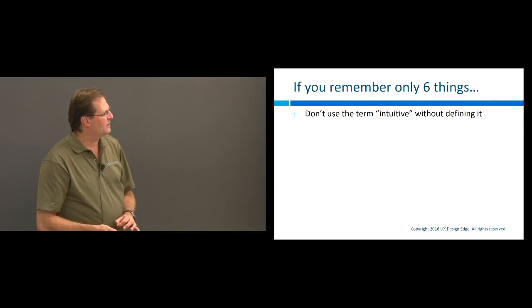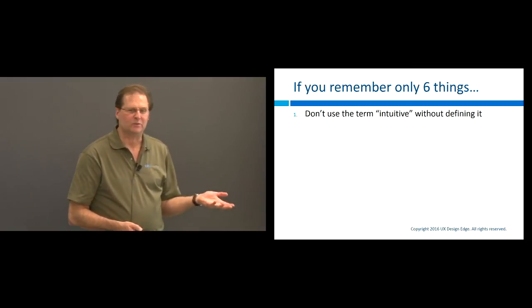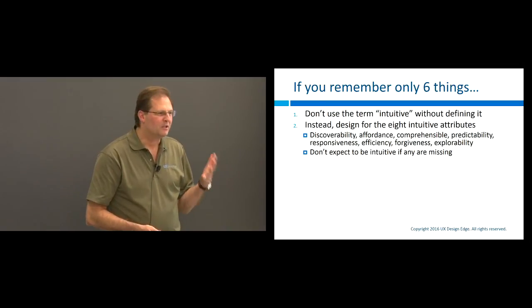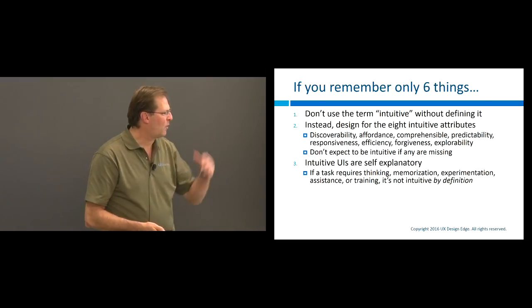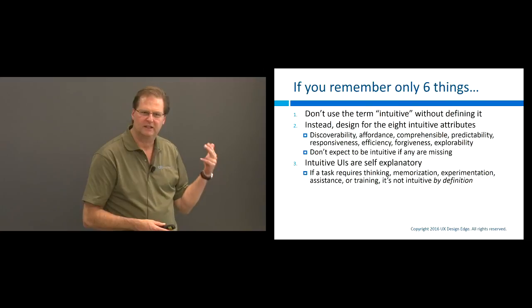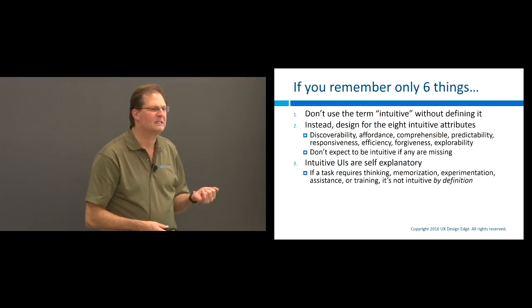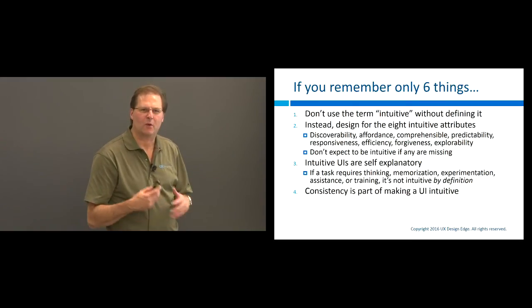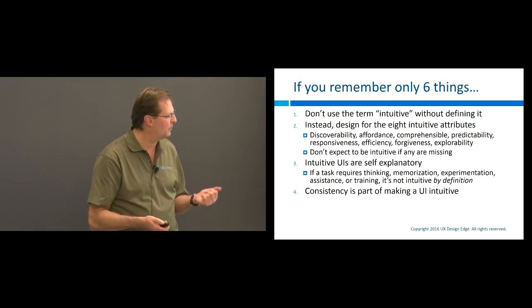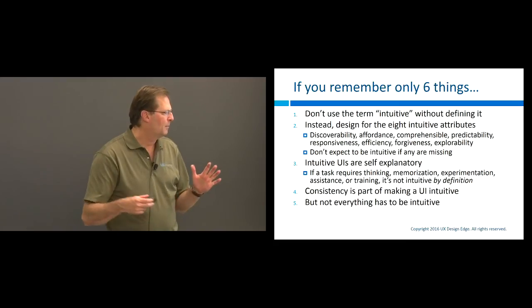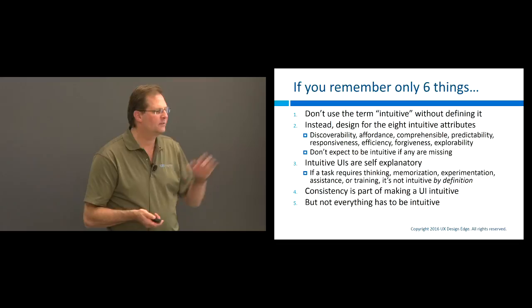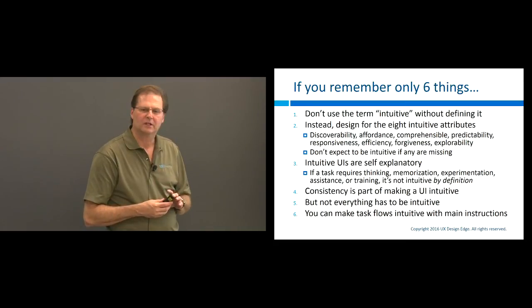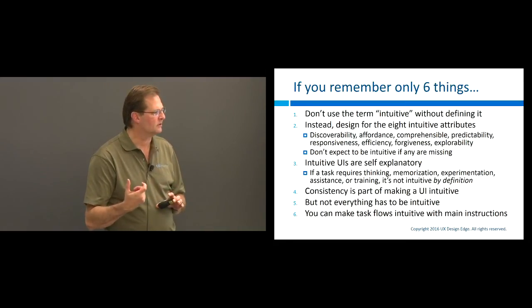If you remember only a few things: don't use the word intuitive without defining it — nobody knows what it means. Instead use the eight intuitive attributes: discoverability, affordance, comprehensibility, responsiveness, predictability, efficiency, forgiveness, explorability. Intuitive UIs are self-explanatory — if it requires thinking, documentation, training, or experimentation, it's not intuitive by definition. Consistency is very important — if your UI is radically inconsistent with your target user's prior experience, it's going to be unintuitive. Not everything has to be intuitive — there are situations where it makes sense not to be. And we can make task flows more intuitive by using main instructions.